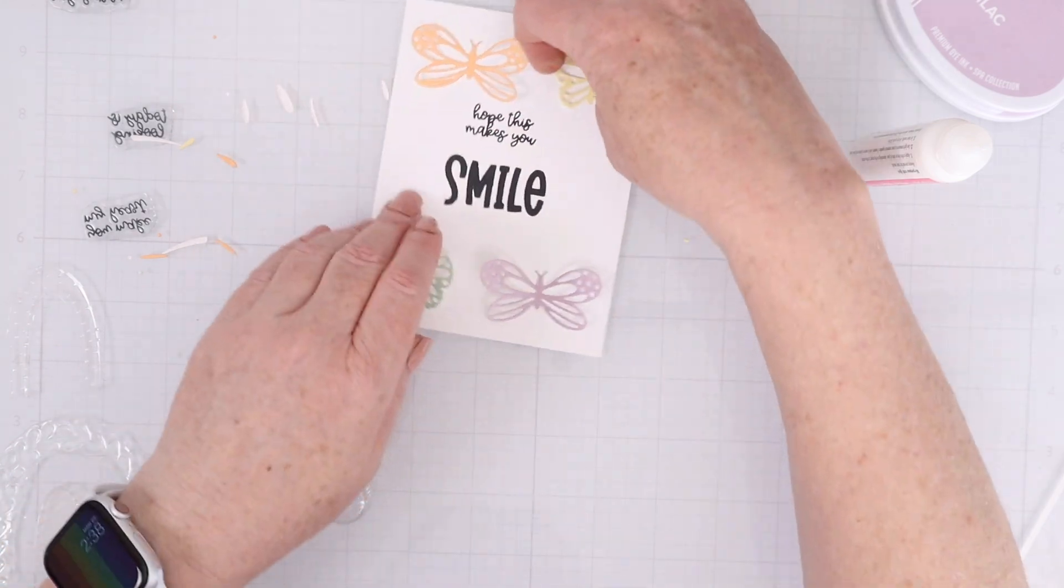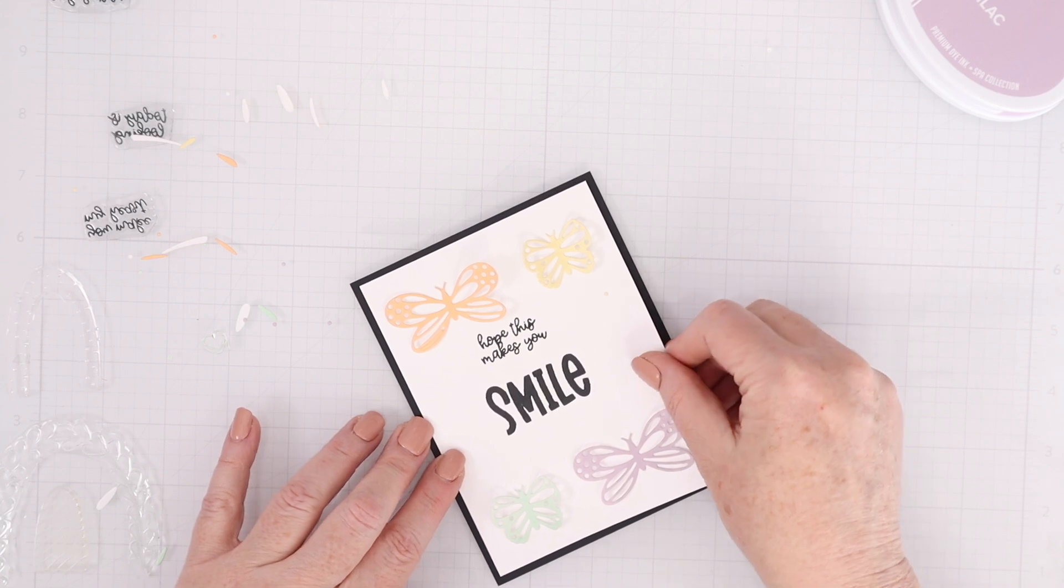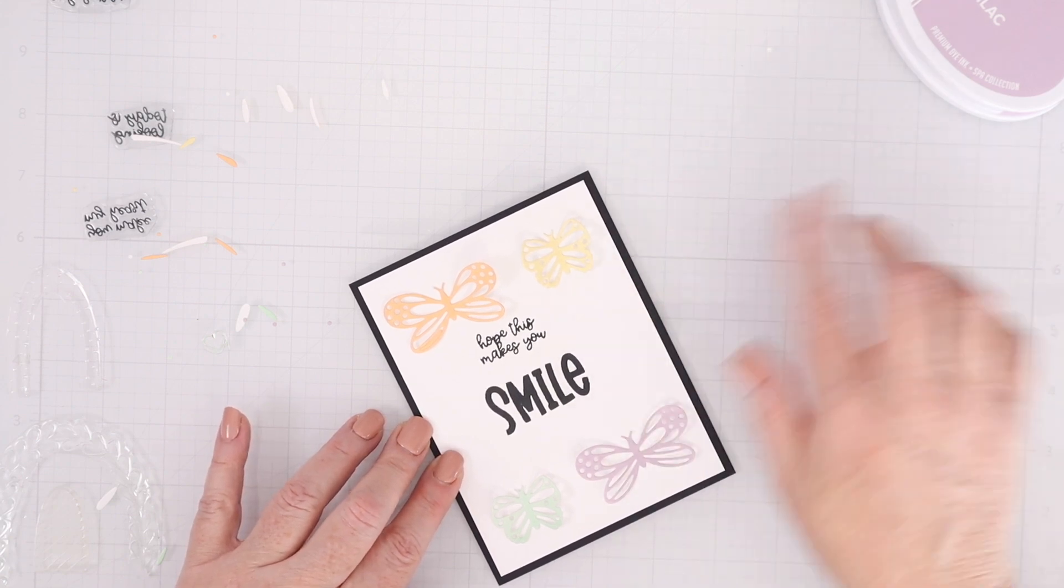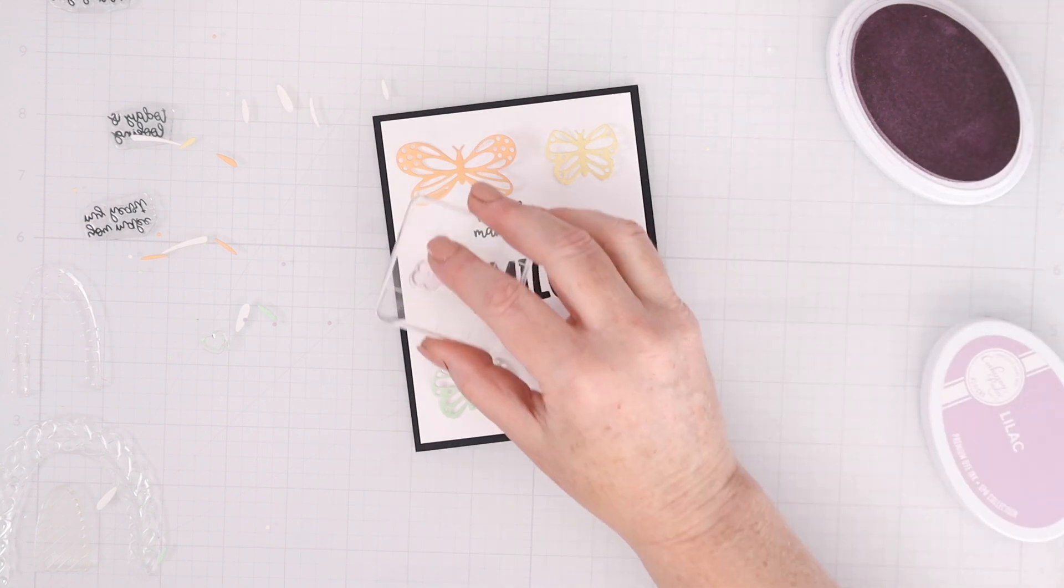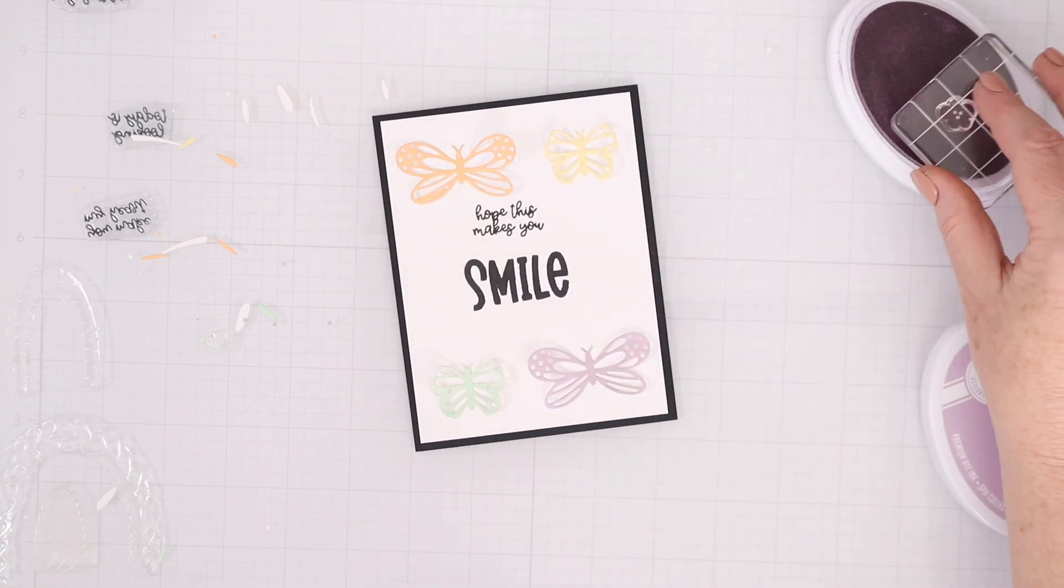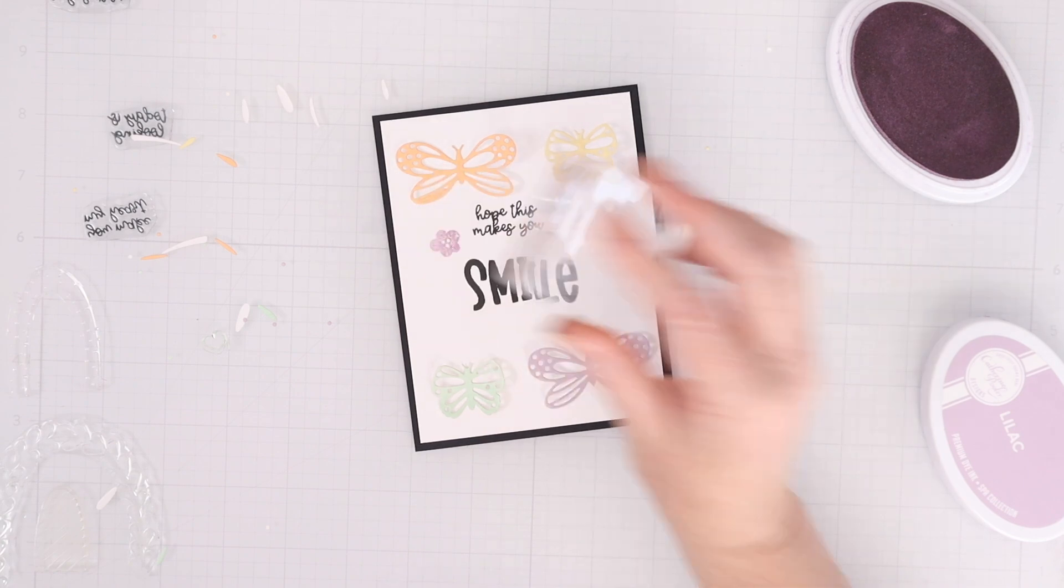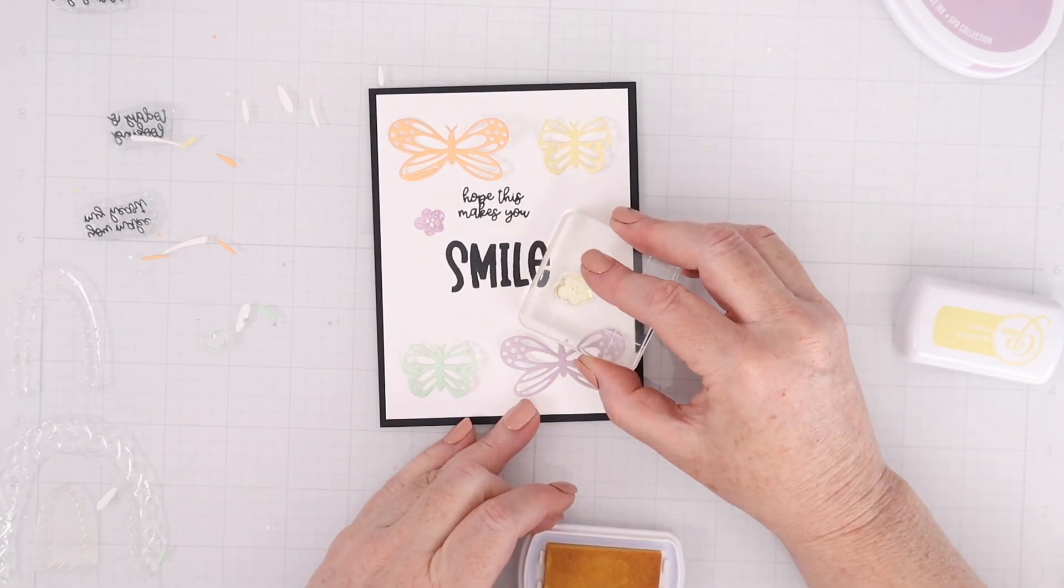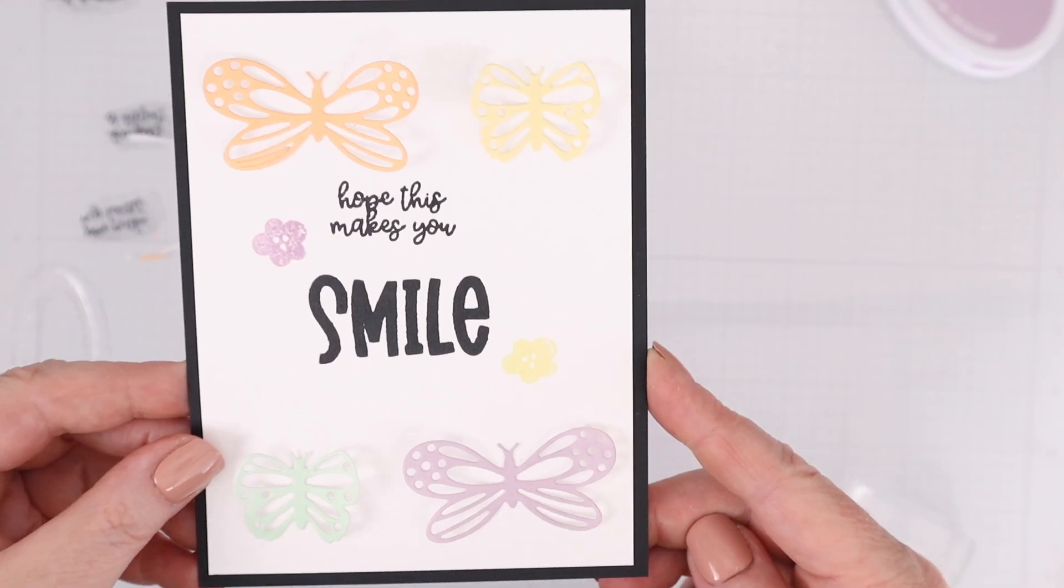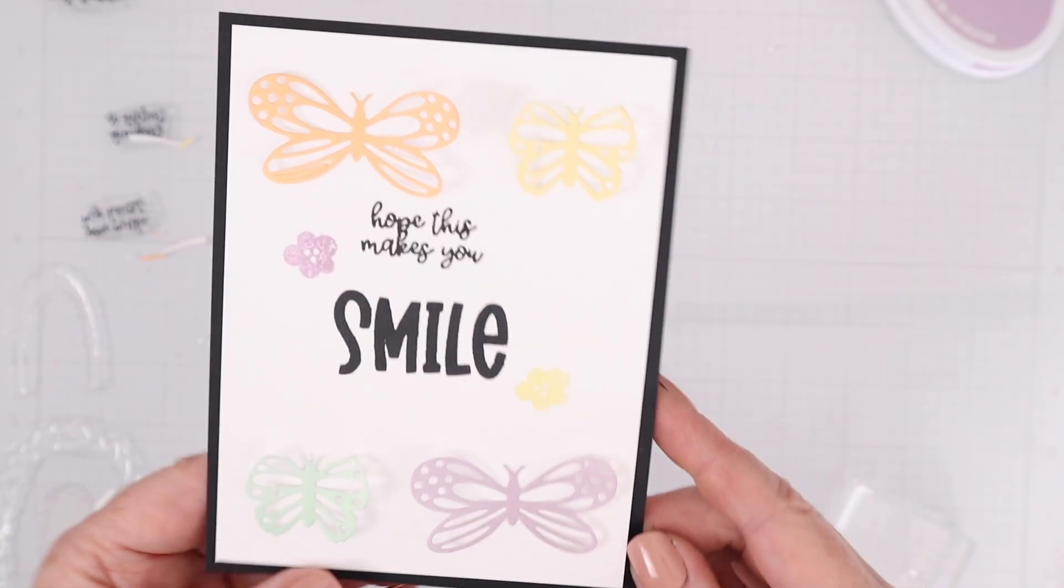I am going to use a black piece of cardstock to mat this because I thought it went really well with the sentiment and that background. And then I'm just going to stamp a couple of flowers. I have Lilac here for the first flower, and then I have the Whipped Honey for the second flower. A very clean and simple card, so much fun to make, and again, love this color combination.